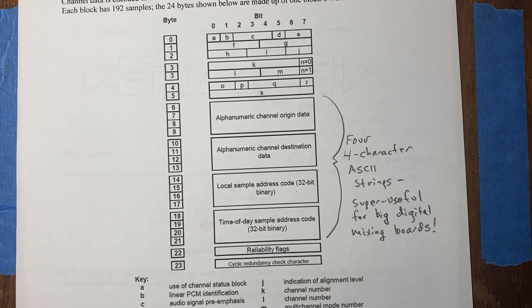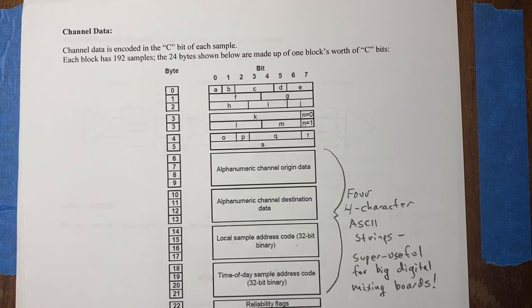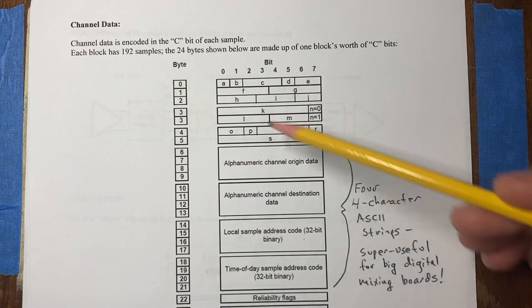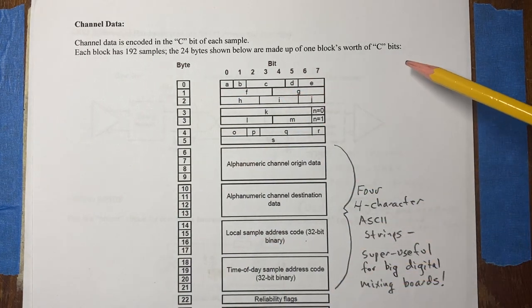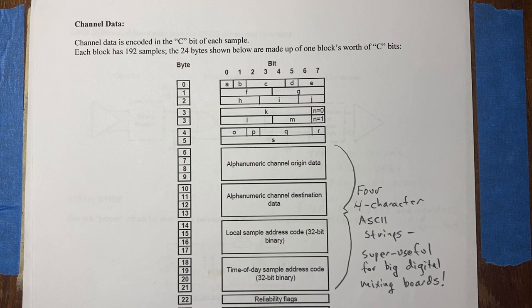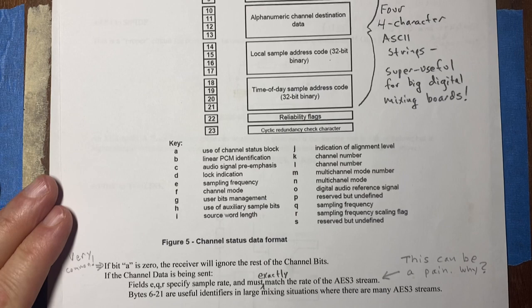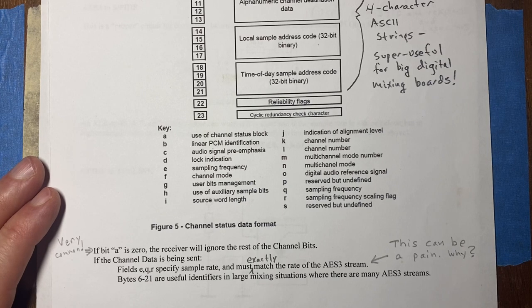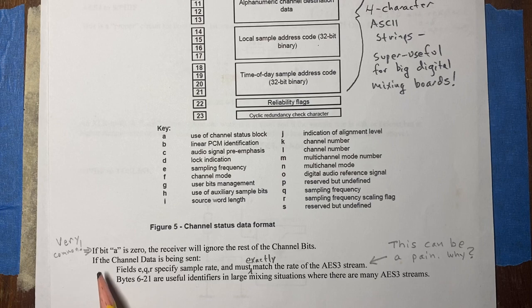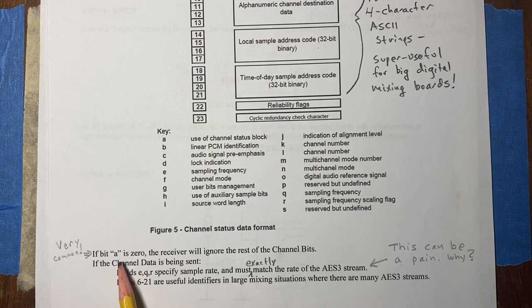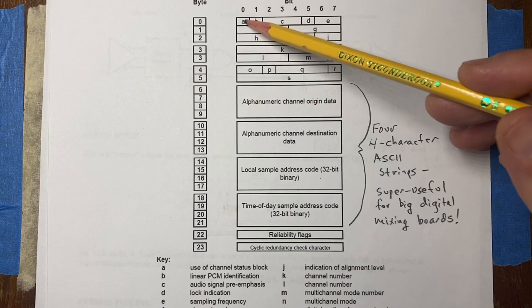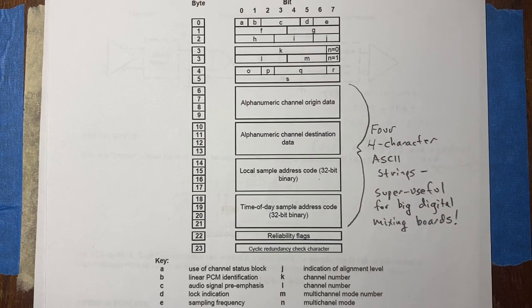There's channel status data — 192 C-bits per block making 24 bytes, numbered zero to 23. There's a very important A-bit here: if the A-bit is zero, the receiver will ignore the rest of these bits. So if you don't want to supply all this extra information, you can set the A-bit to zero. That's useful if you have a small setup and don't need it. It was frustrating in the past because if you did supply this information, you had to be very careful with it — a combination of fields tells the receiver the sample rate, but the receiver already figured that out just to receive the data.